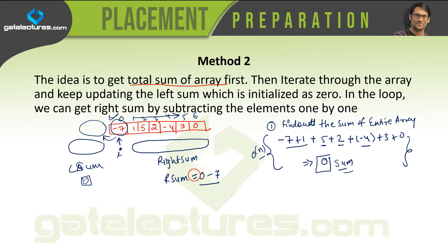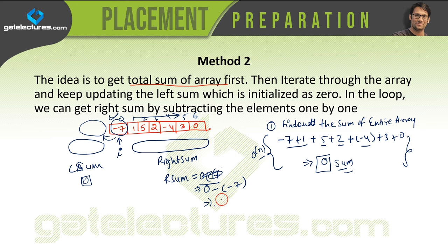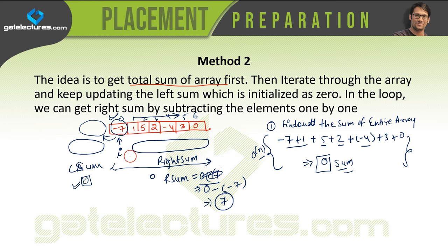The right sum is the total sum minus the current element. Since the total sum is 0 and the current value is minus 7, the right sum is 0 minus (minus 7), which is 7. The left sum is still 0. Since 0 is not equal to 7, we increment the value of i.